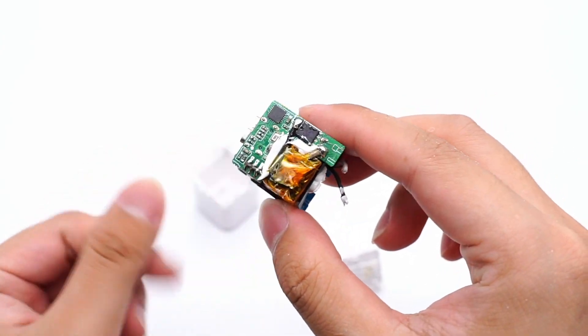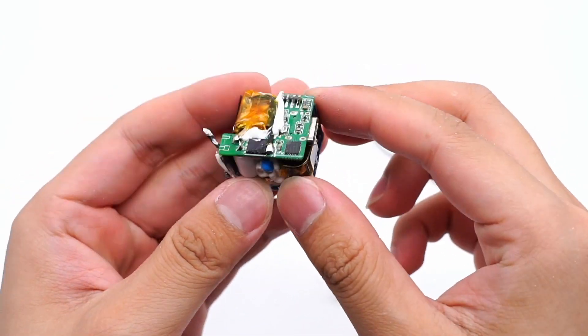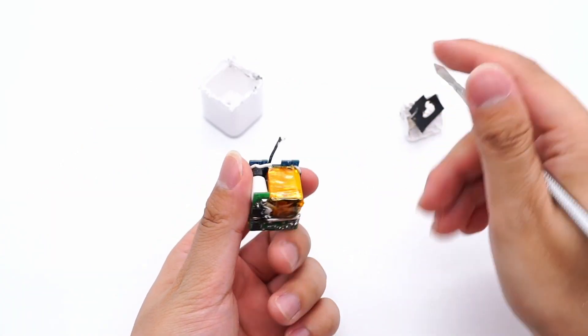The capacitors, transformers, and other components are placed between the layers for saving space. There are lots of thermal adhesives between components. Tear off the isolation layer.